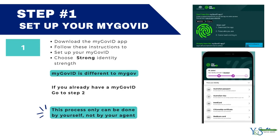Step one — set up your MyGovID. This process can only be done by yourself, not by your tax agent. You need to download the MyGovID app and make sure you have your documents ready, such as your passport, driver's license, birth certificate, or Medicare card. If you are a foreign passport holder, you can use your visa. You can verify valid IDs at www.mygovid.gov.au. Remember, MyGovID is different to MyGov. Also keep in mind that your MyGovID is unique to you and uses your personal information, so you can't share it with others.